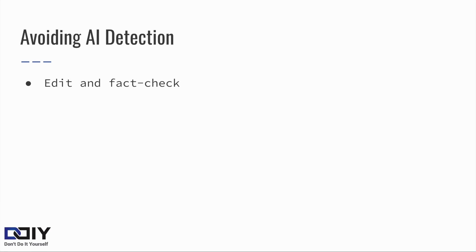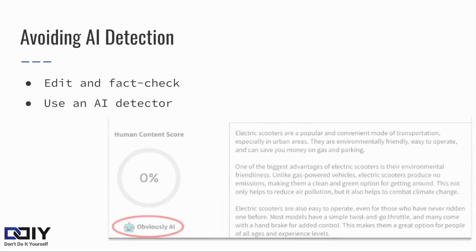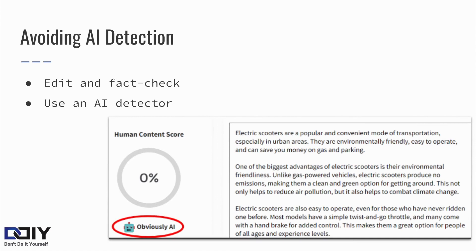You should also use an AI detector. Most AI detection tools are not exact, so they typically provide a probability of how likely content is generated by AI. I created this example using AI and it was easily detected. In this case, you should keep making edits until the probability of it being human written becomes high. Alternatively, you can also iterate over your content using AI tools until the content passes an AI detector.